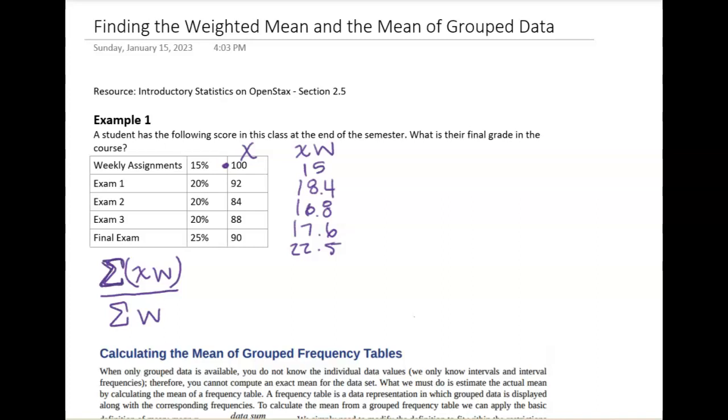Then this sigma, this capital sigma here, means add all of those up. So 15 plus 18.4 plus 16.8 plus 17.6 plus 22.5 gives us a 90.3. Now the second part of this says, and then divide that by the sum of the weights. Well, in this case, I changed all of these to be decimals. So the sum of the weights is 1.0. So if I were to divide this by 1.0, I would just end up getting that as my grade.